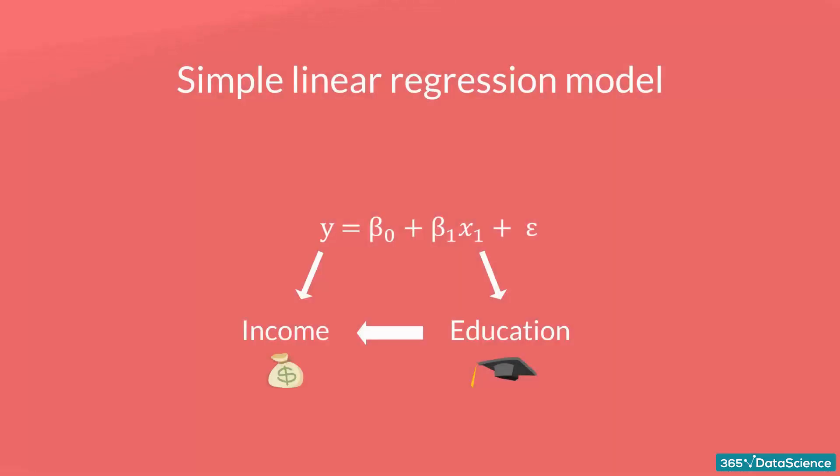Let's go back to the original example. Income is a function of education. The more years you study, the higher income you will receive. This sounds about right. Alright, what we haven't mentioned so far is that, in our model, there are coefficients.